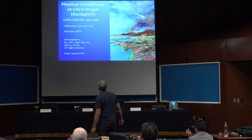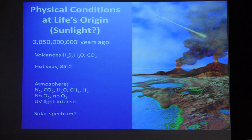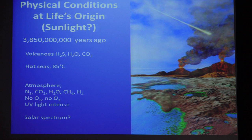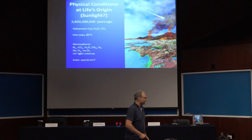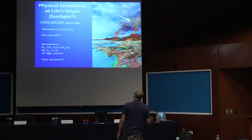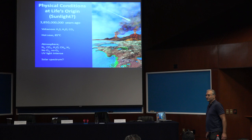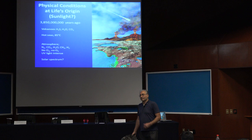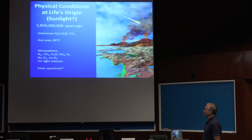Before I go on to the theory, I have to explain a little bit about the physical conditions of Earth 3.85 billion years ago. We can make some simple assumptions: the interior of the Earth was hotter due to more radioactivity, so there would have been more volcanic activity. Those volcanoes would have been spewing out hydrogen sulfide, water, and carbon dioxide — the same gases exposed from volcanoes today. The seas were hot, about 85 degrees centigrade, as we know from oxygen isotope ratios found in sediments of that era.